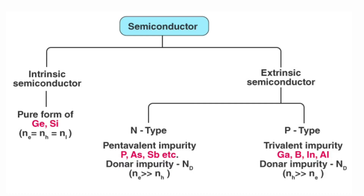Semiconductors have two main types of classification: Intrinsic Semiconductors and Extrinsic Semiconductors.